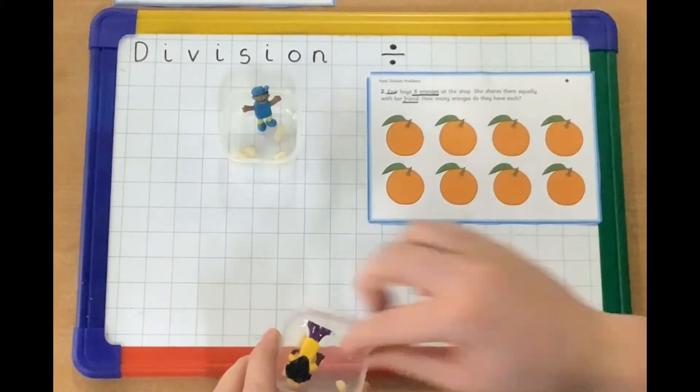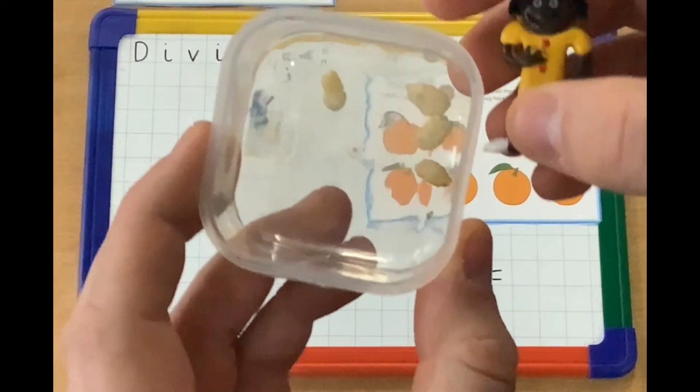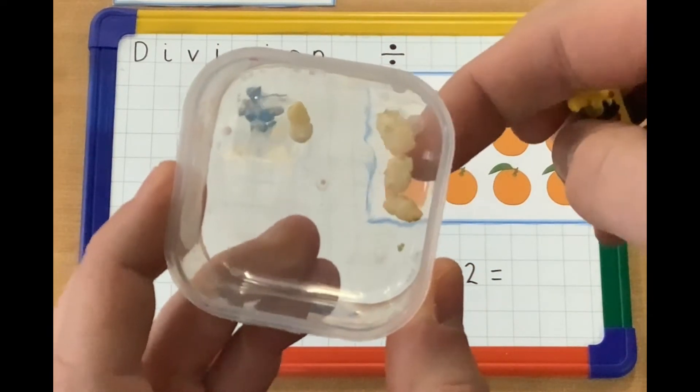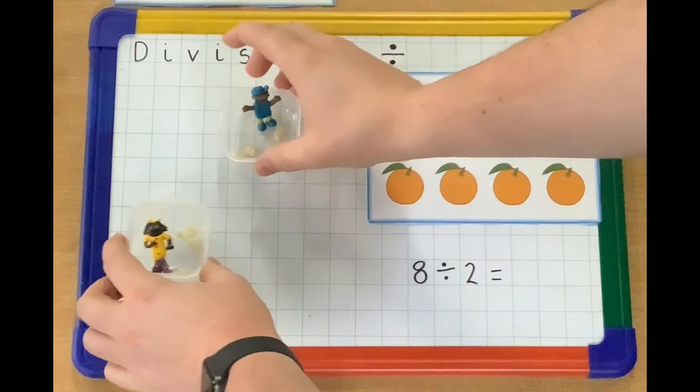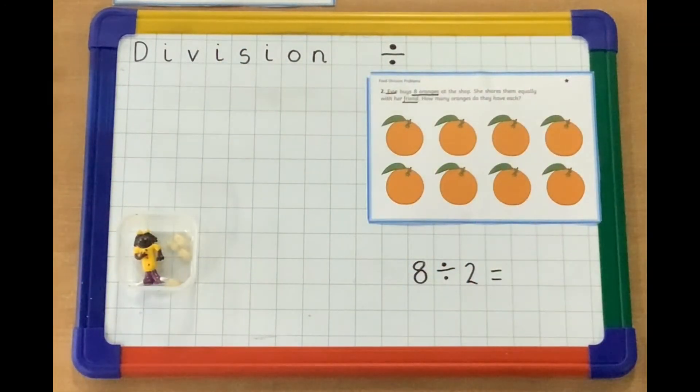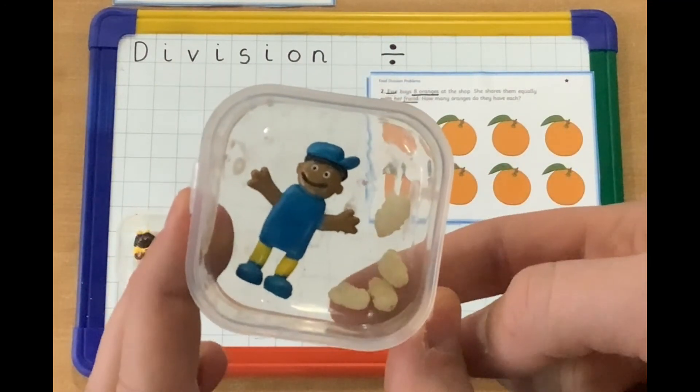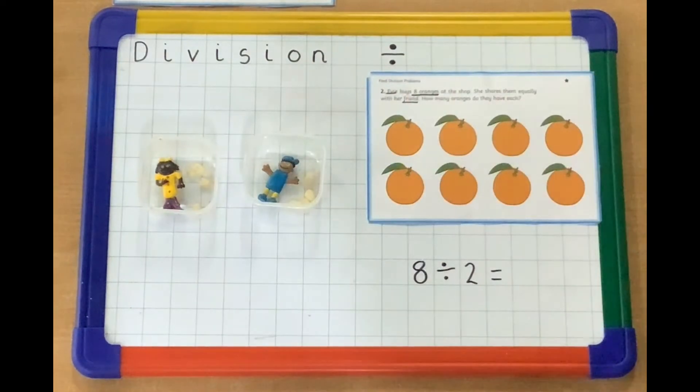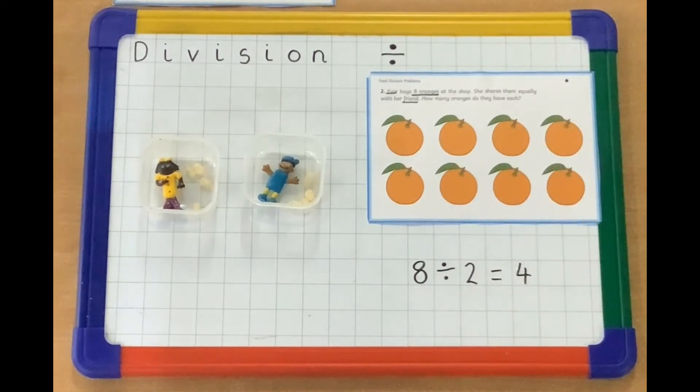we need to count and see how many Evie and her friend have in their pot. This is Evie's pot. We can see that she has one, two, three, four oranges. Let's make sure they're equally shared. Her friend's got four as well. Have a look. One, two, three, four. They both have four oranges. So eight oranges divided by two people gives them four oranges each.